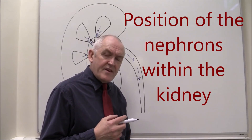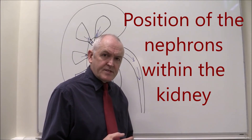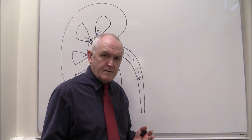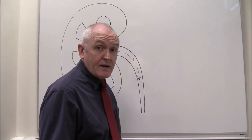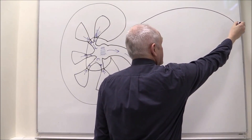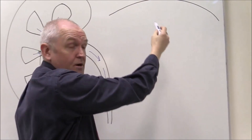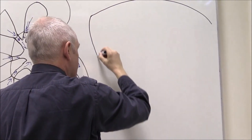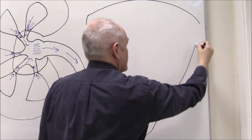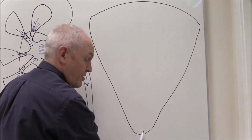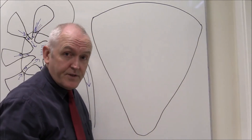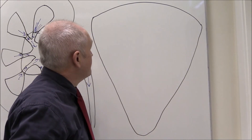Let's now consider where the nephrons fit into this macroscopic renal structure. So let's imagine we have a renal pyramid here. This is the base of the pyramid at the top, going down to the apex. This will be the papilla at the bottom. So this is an enlarged version of one of the medullary pyramids.